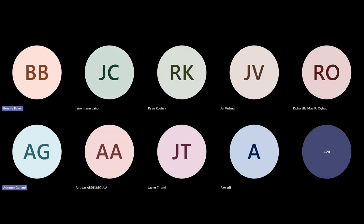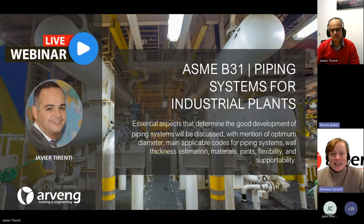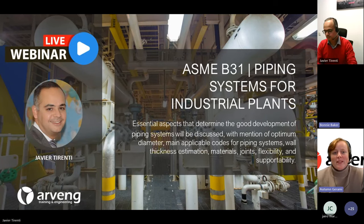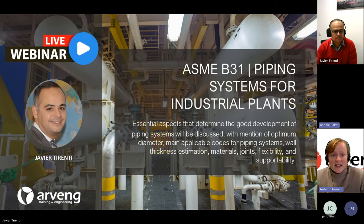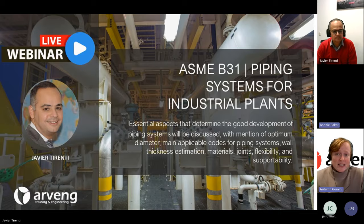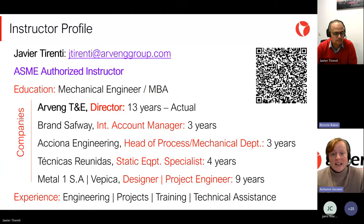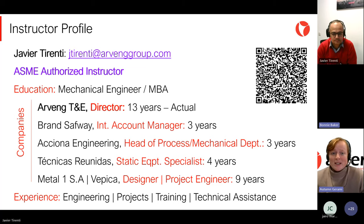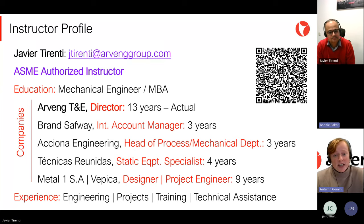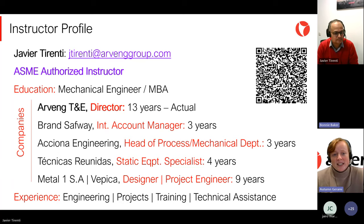Hi everyone, good afternoon. Welcome to this webinar about ASME B31 Piping Systems for Industrial Plants. This webinar will be given by Javier Tirente, a senior mechanical engineer with a master's in business administration. He has over 20 years of experience in the design, calculation, and production of mechanical equipment such as pressure vessels, heat exchangers, storage tanks, piping systems, and other structures. He has extensive experience teaching specialized training courses, both in person and online. Javier is also an ASME authorized instructor.